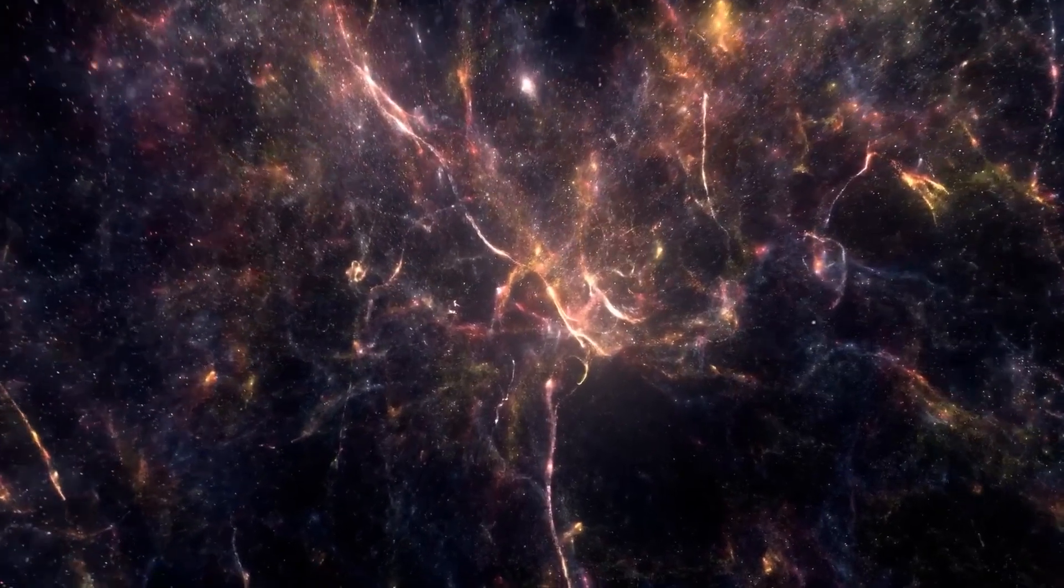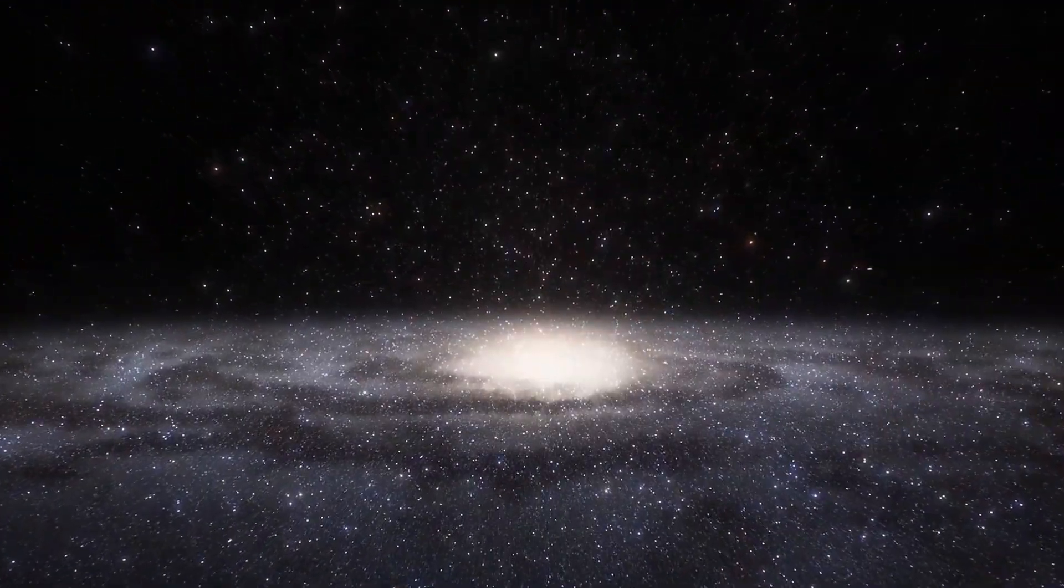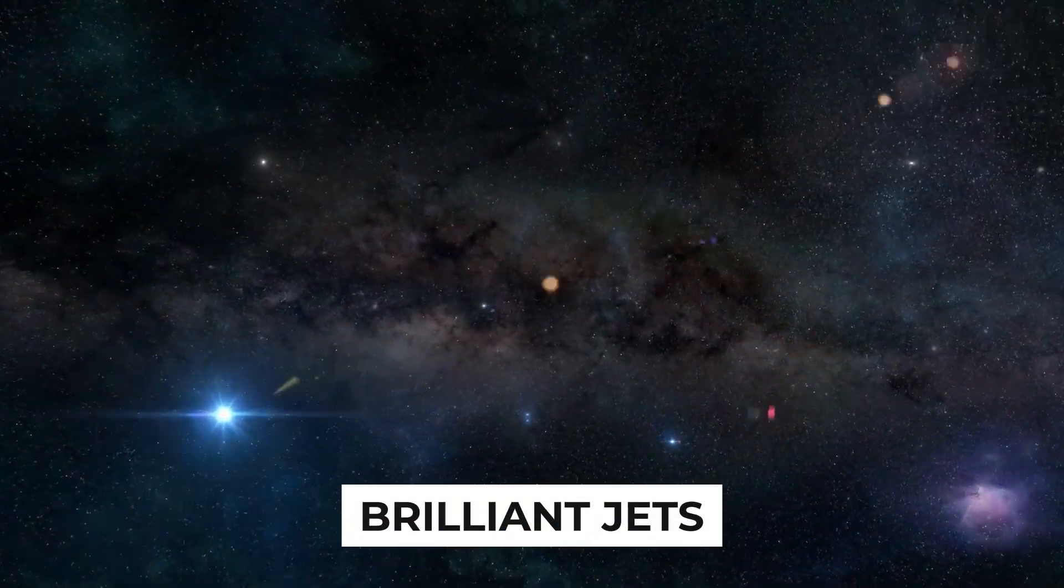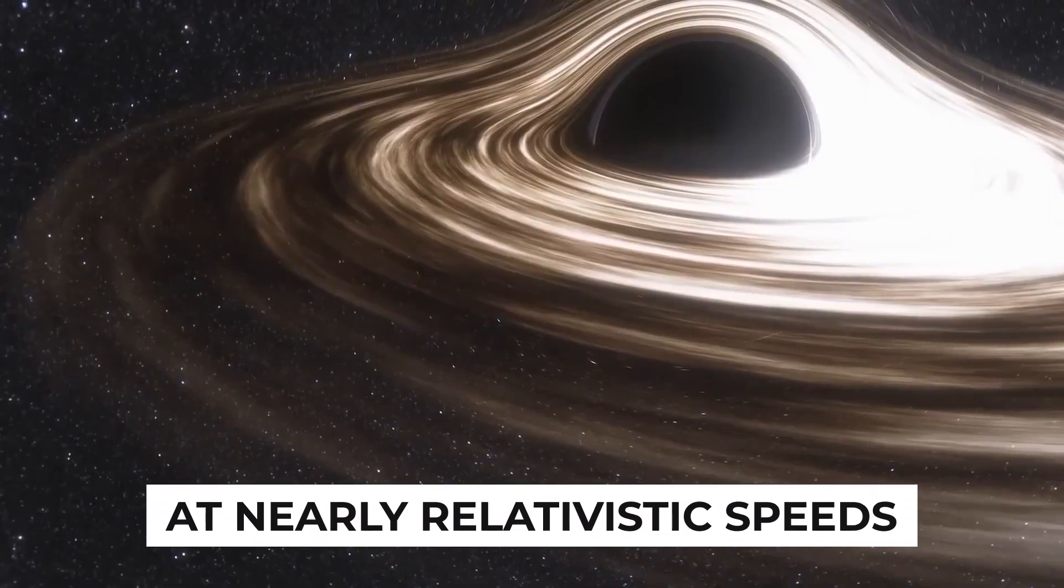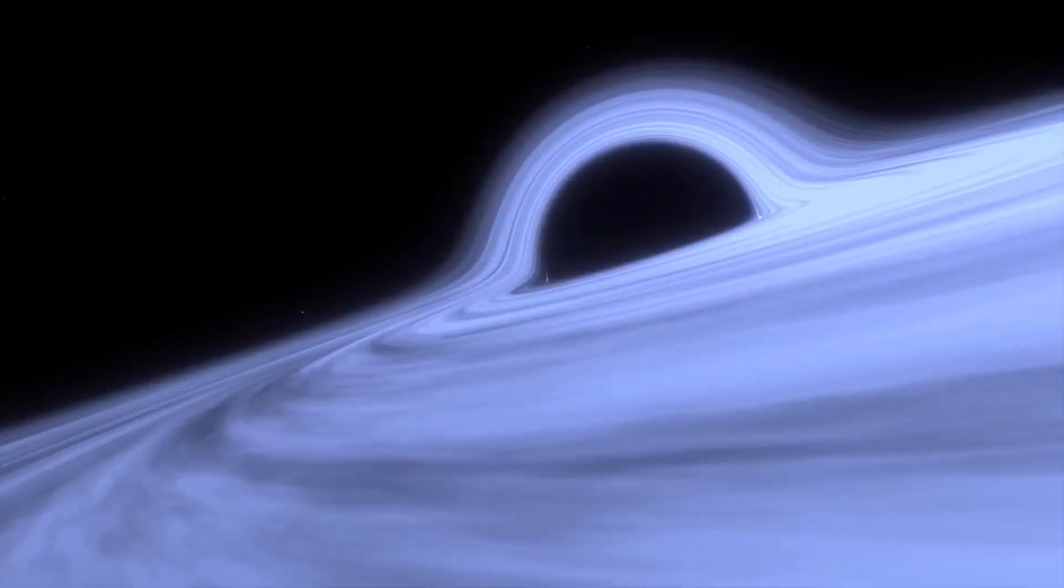In some cases, matter is pulled towards a black hole, but instead of being sucked into the center, it is thrown outward after colliding with the event horizon. It creates brilliant jets of material moving at nearly relativistic speeds. You can see these tremendous jets from far away, whereas the black hole is invisible.